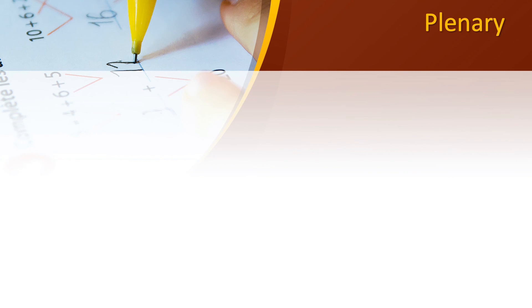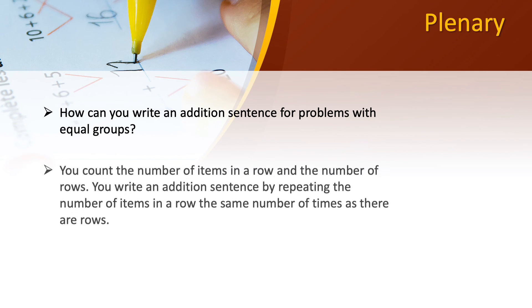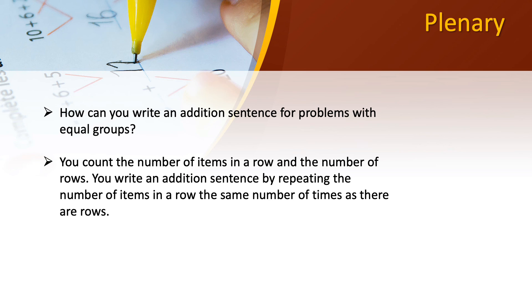And finally, let's look at the plenary. How can you write an addition sentence for problems with equal groups? You count the number of items in a row and the number of rows. You write an addition sentence by repeating the number of items in a row the same number of times as there are rows. Wasn't that a very easy lesson children? I hope you enjoy it. Take care and I'll see you soon. Bye bye.